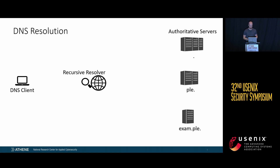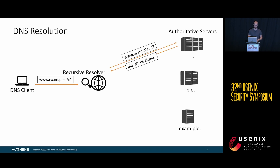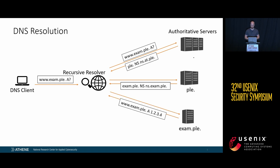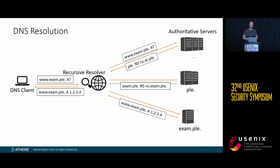Just to get us on the same page: DNS resolution works as follows. We have a DNS client that sends a request to a recursive resolver. The recursive resolver, assuming nothing is in its cache, will query the authoritative server of the root zone and then be referred down the DNS hierarchy up to the server which has the answer. These values are then cached and forwarded back to the client.